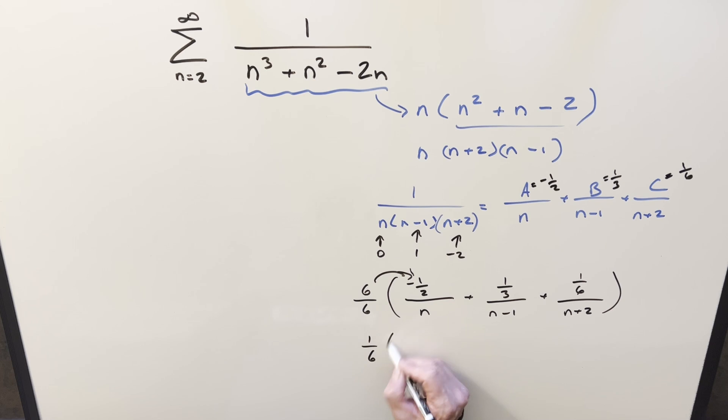So when we do that, we have 1 over 6, this becomes minus 3 over n, this one becomes 2 over n minus 1, and this last one's just 1 over n plus 2. And then we'll take this thing and plug it back into our sum.